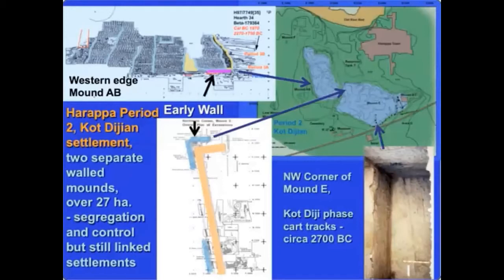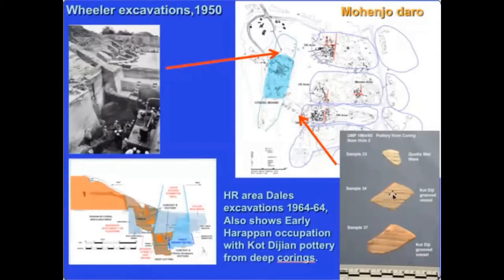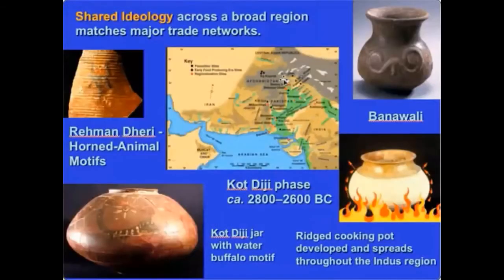The walls protected against bandits and controlled access into and out of a site. The fact that two walled settlements sat right next to each other indicates they were not fighting each other but competing economically. At Mohenjo-daro, recent research on materials excavated in 1964 shows evidence for a Kodigian settlement beneath Mohenjo-daro. So whether it's Mohenjo-daro, Harappa, Dholavira, or Rakhigarhi, the main Indus cities were all developing along a similar trajectory.